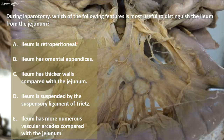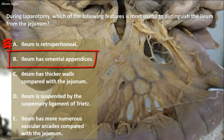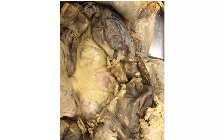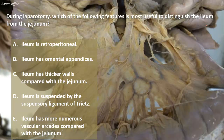The ileum is intraperitoneal, and you can see here the mesentery of the ileum — it is the mesentery of the small intestine, a continuation of the mesentery of the small intestine. The second choice: the ileum has omental appendices. The omental appendices are finger-like processes that contain fat storage, and these are in fact a characteristic feature of the colon. They are not present in the small intestine, so this option is wrong.